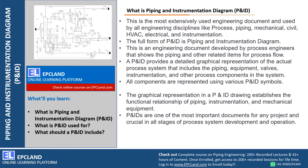First, let us talk about what is P&ID. This is the most extensively used engineering document, used by all disciplines — for example, process, piping, mechanical, civil, HVAC, electrical, and instrumentation. So this becomes the basis for all disciplines to start their engineering work. The full form of P&ID is Piping and Instrumentation Diagram. This is the most commonly used word for P&ID.